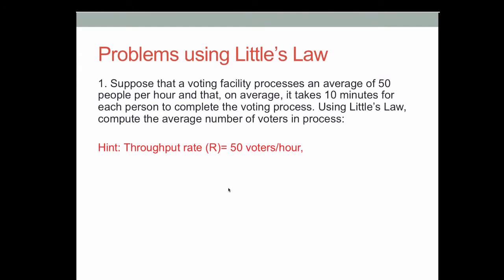Here is a hint. The throughput rate R is 50 volts per hour. The flow time t is 10 minutes. Please remember that units should be the same — since we are using hours in the throughput rate, we have to use hours in the flow time as well.